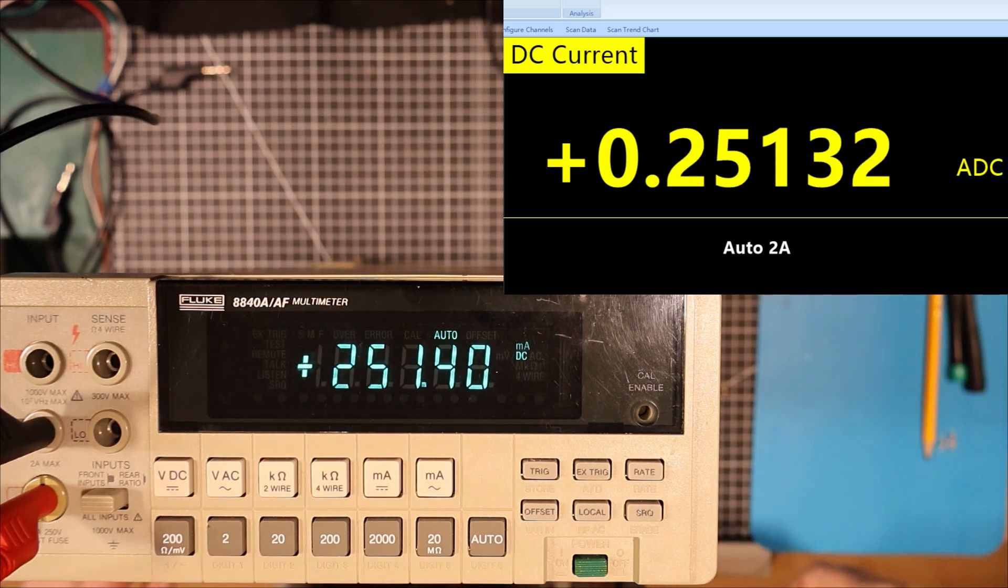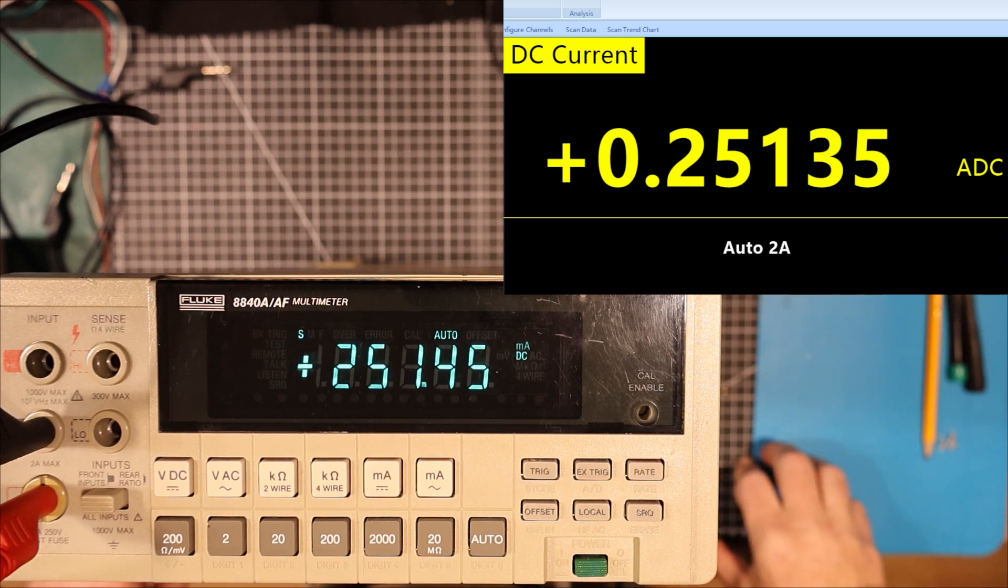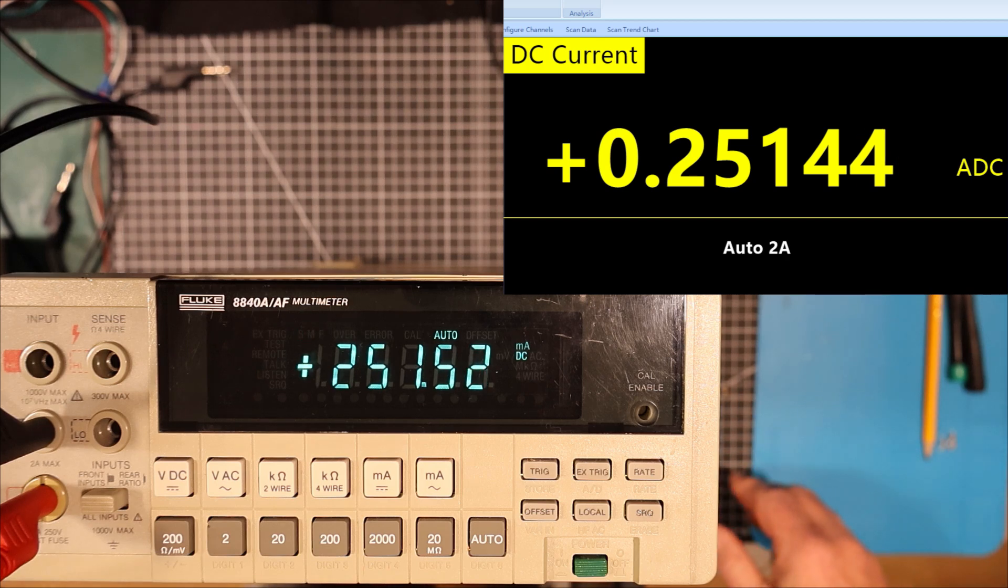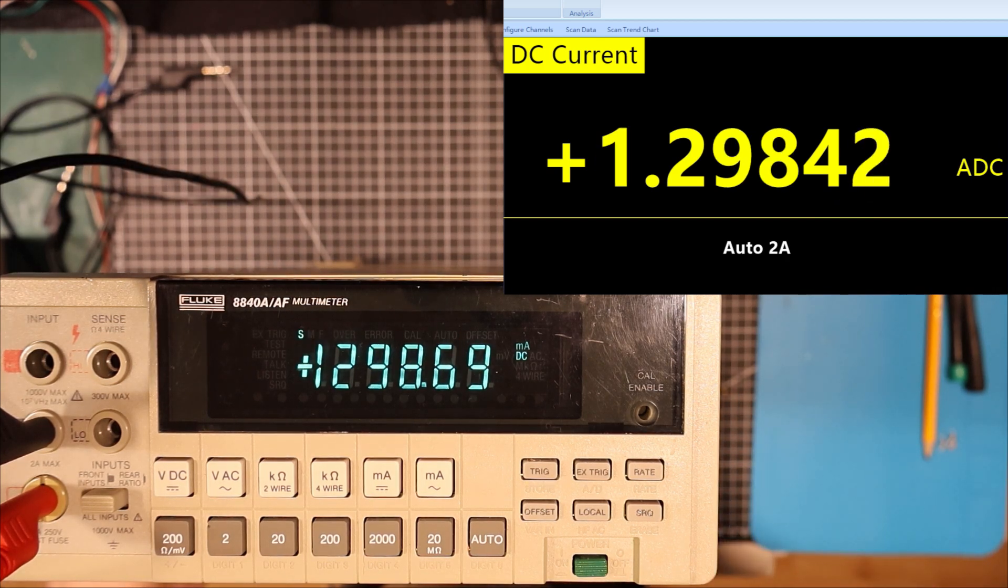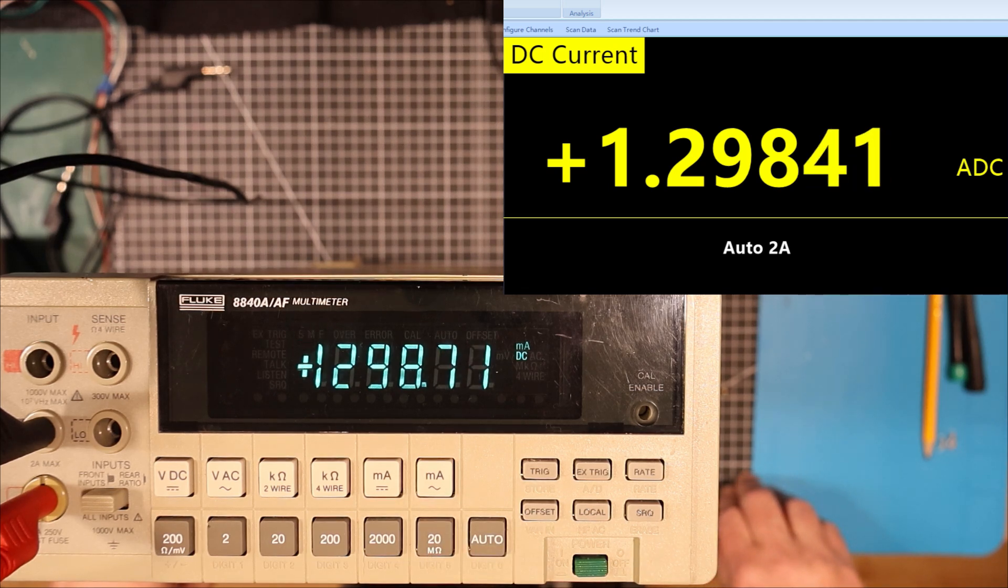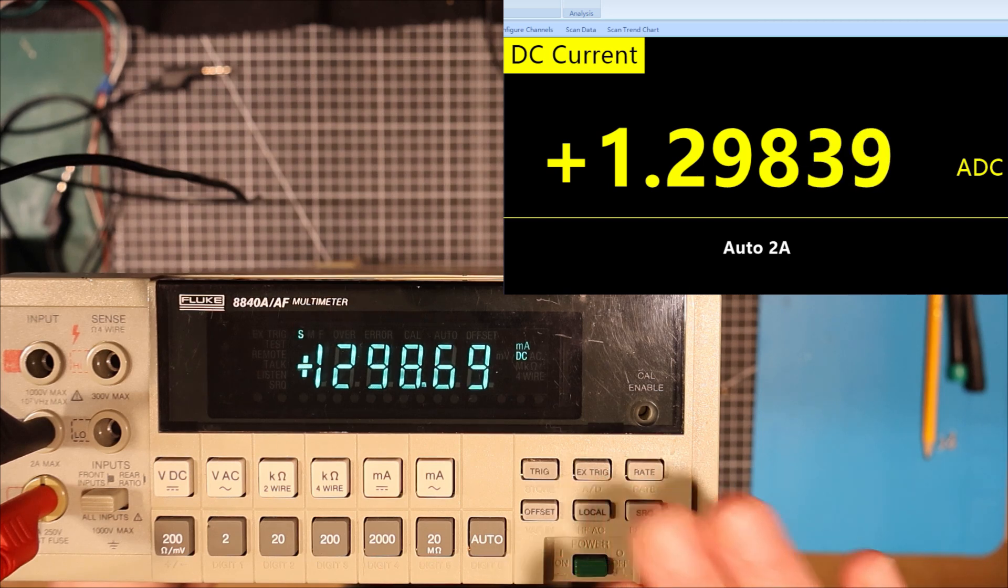So let's bring the current up. Here we got 251.4 milliamps and 251.4 milliamps on the... Yeah, so we're again off by a couple of counts here or there. Let's bring it up into the amps range. So we've got... Don't mind that beeping in the background. That's just my Signalent power supply telling me it's in constant current mode. So we've got here 1.29869 and we've got the Signalent got 1.29841. It was a little tad off there but I'm not going to get upset about that.